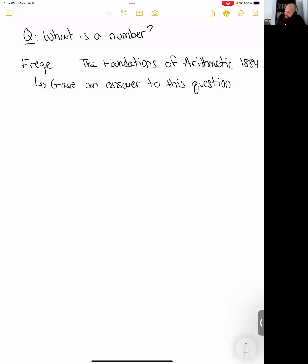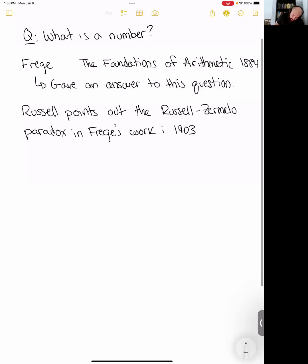Russell points out what I'll call the Russell-Zermelo paradox in Frege's work. This was in 1903, not in the paper Foundations of Arithmetic, but in the other paper Basic Laws of Arithmetic volume two.